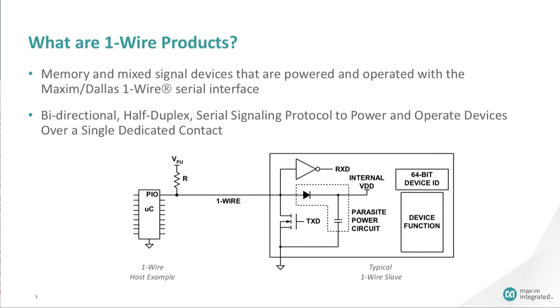One-wire technology refers to a serial signaling protocol in which power and data can be sent over a single wire. The signal transfer can be bi-directional, or half-duplex.